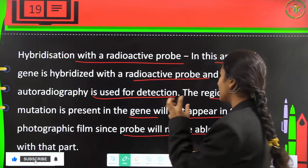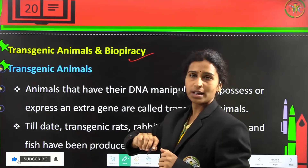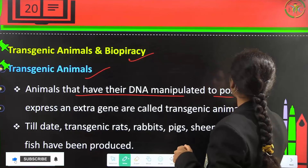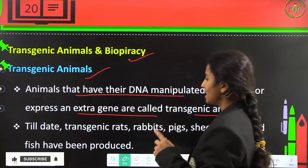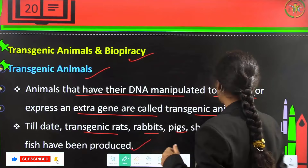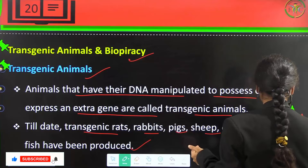Transgenic animals and biopiracy. Animals that have their DNA manipulated to possess or express an extra gene are called transgenic animals. Till date, transgenic rats, rabbits, pigs, sheep, cows, and fishes have been produced, such as mutated rat and mutated cow breeds.